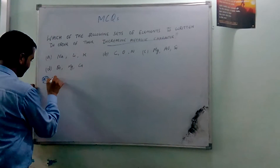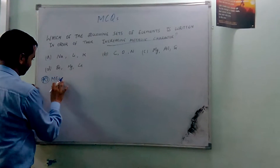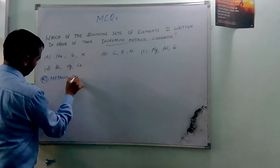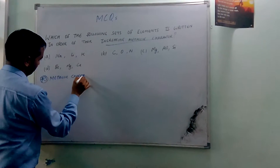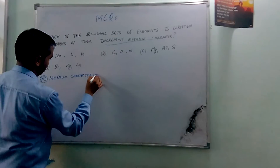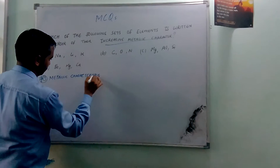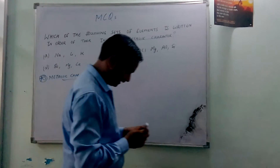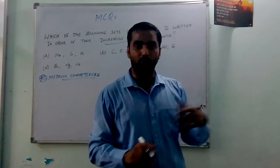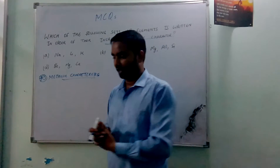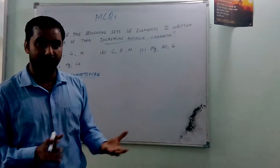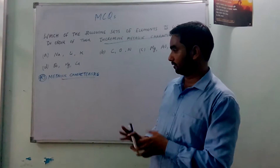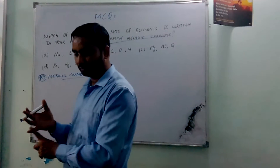Before we look at the options, I want to tell you what metallic character is and how it increases. Metallic character of an element is the tendency to lose electrons. Elements which have a higher tendency to lose electrons have a high metallic character.